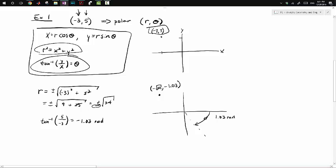So this point will be (-√34, -1.03 radians). Of course, there's many ways to express this point. If we use the positive square root of 34 and want to end up here, we would add pi to the -1.03 radian. That gives us about 2.109 radians. So (-√34, -1.03 rad) equals (√34, 2.109 rad). Both are correct.